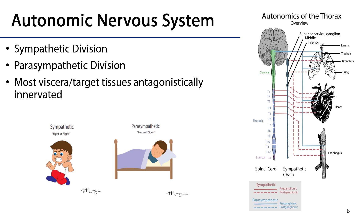There are two divisions to the autonomic nervous system: the sympathetic division and the parasympathetic division. Most of the viscera and target tissues of the body are antagonistically innervated, meaning they're innervated by both the sympathetic division and the parasympathetic division and they will have opposite effects on that target tissue or organ.